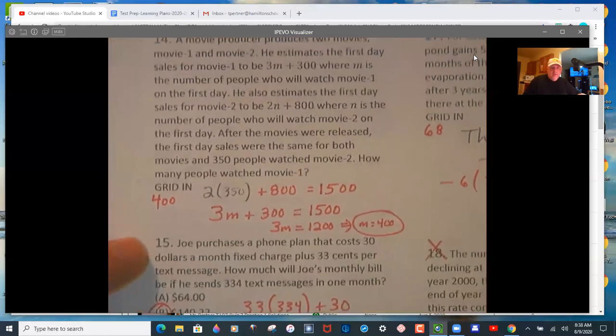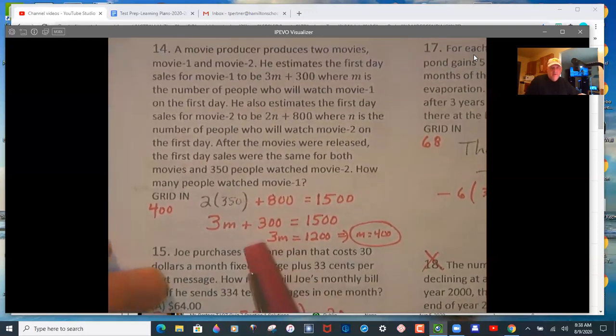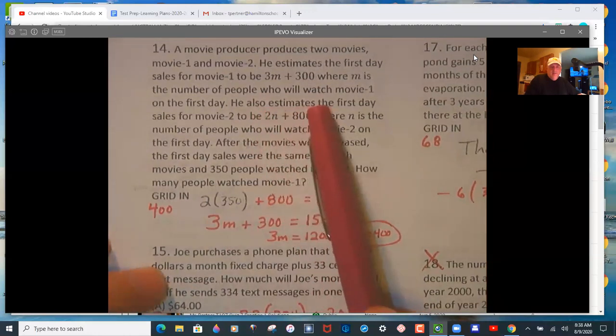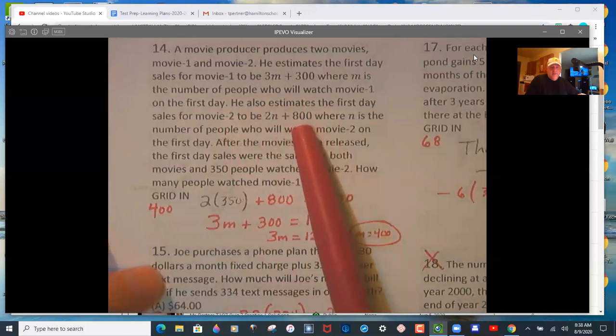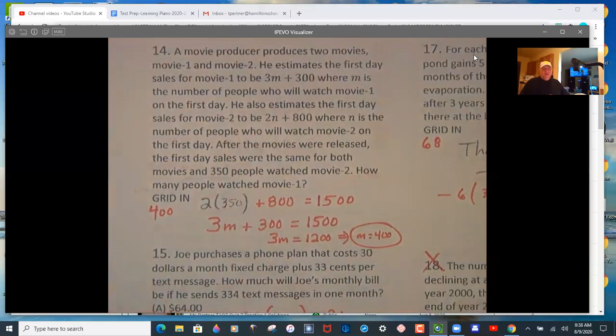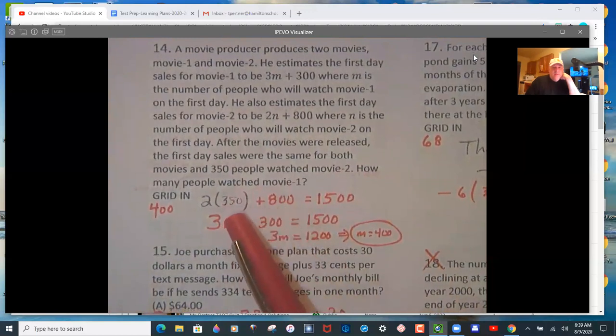So on this back page, we can have a calculator. So here is what you're trying to figure out. So 3n plus 300, the n is the number of people who watched the movie on the first day. And then 2n plus n is the number of people who watched the second day. How many people watched movie one? So you get that your n has to be 350.